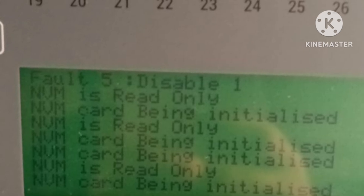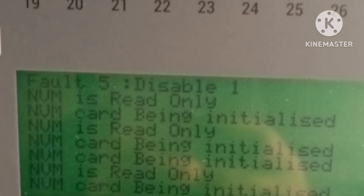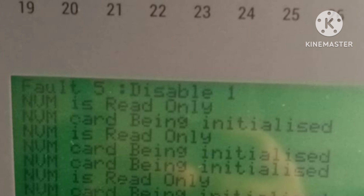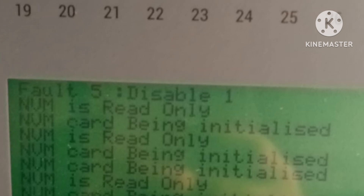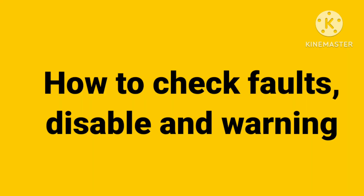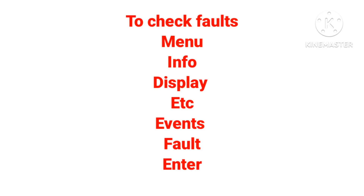If you see something like 5 faults and 1 disablement on the panel, I will show you the steps to check them. To check faults, first go to Menu, then Info, then Display — we have two options: Display and Print. To check only, go to Display, then Events, then Fault, then Enter. You can then use Previous and Forward to browse through the faults.